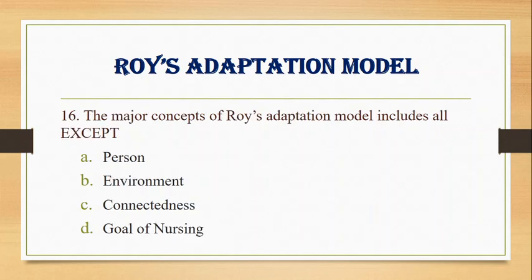Number 16. The major concepts of Roy's adaptation model includes all EXCEPT: A. Person, B. Environment, C. Connectedness, D. Goal of nursing. Answer: C. Connectedness.